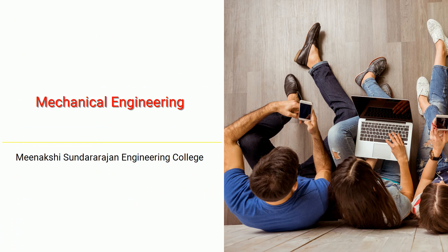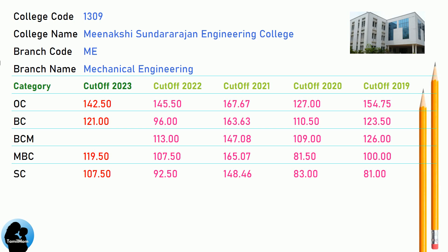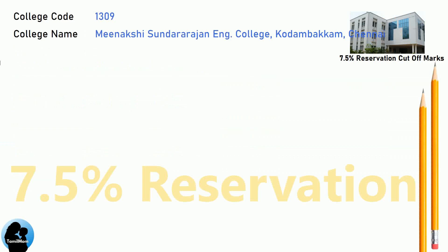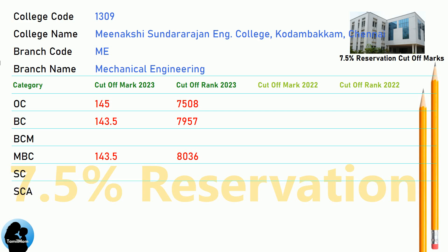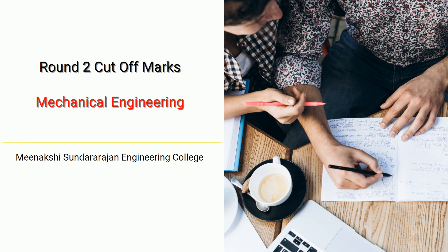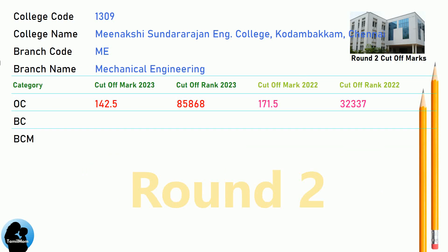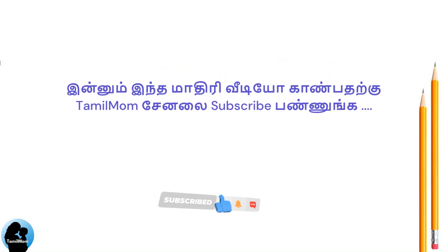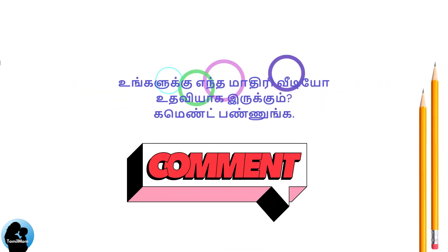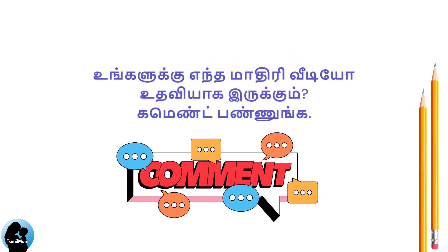DNA Cut-Off for Meenakshi Sundararajan Engineering College in Mechanical Engineering. DNA 7.5 Reservation Cut-Off for Meenakshi Sundararajan Engineering College in Mechanical Engineering. DNA Round 2 Cut-Off for Meenakshi Sundararajan Engineering College in Mechanical Engineering. DNA Round 3 Cut-Off for Meenakshi Sundararajan Engineering College in Mechanical Engineering.